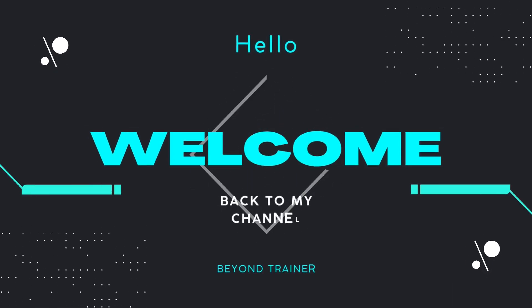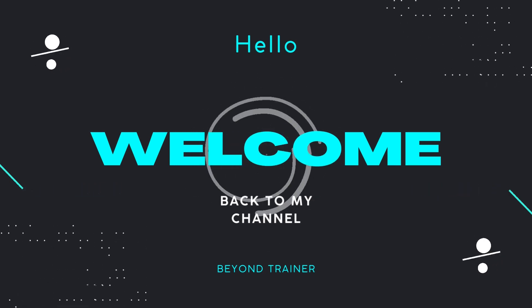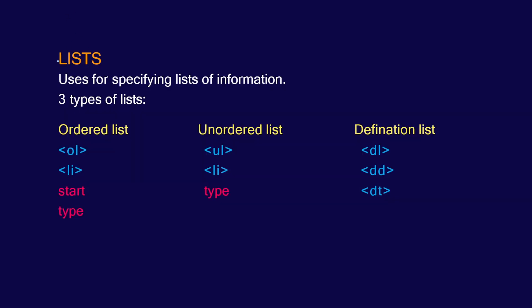Hey guys, welcome back to the channel. In our previous videos we have seen some of the tags of HTML and their attributes. In today's video we are going to continue the tags of HTML for the HTML course for beginners from basic to advanced. In today's video we are going to see another interesting tag of HTML — that is the list tag. This list tag is used for specifying the list of information in your HTML document or your web page.